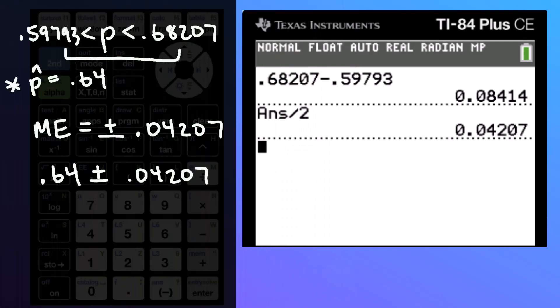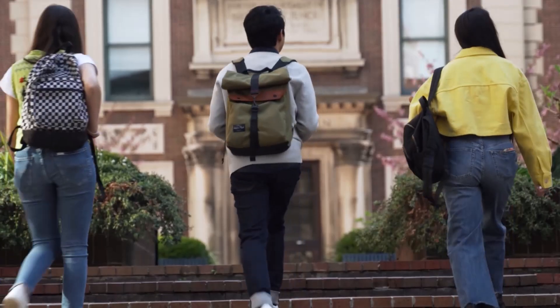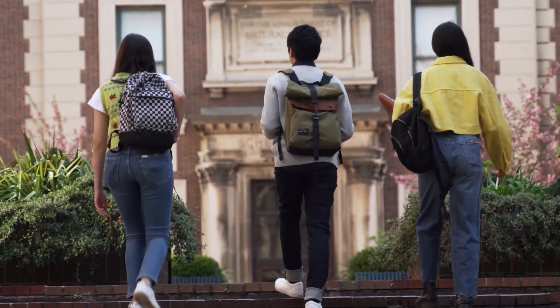I'm going to show you a really easy way to do a confidence interval for proportions using your calculator starting with this example. So we've got this survey of 500 high school students, 320 of them said that yes they plan to attend college.